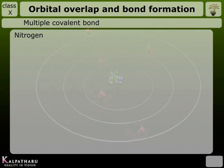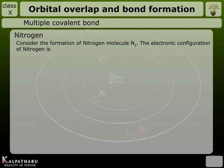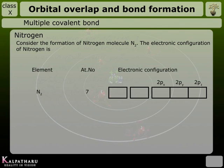Multiple covalent bond. Consider the formation of nitrogen molecule N₂. The electronic configuration of nitrogen is 1s², 2s², 2p³.